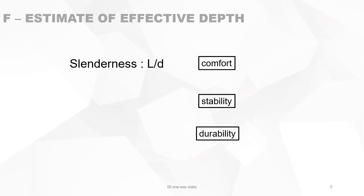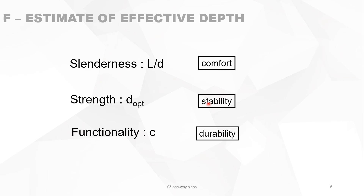To obtain an estimate of the effective depth there are three criteria that you have to follow. The first one is comfort or slenderness. The second one is stability or strength, and the third one is durability, or we can also call it functionality. Comfort is determined by slenderness, which is the span divided by the effective depth. Stability is known by strength, which is directly proportional to the effective depth. Functionality is governed by the concrete cover and is related to durability.